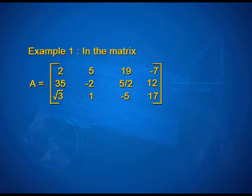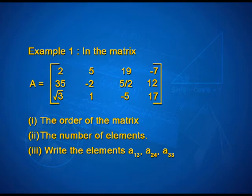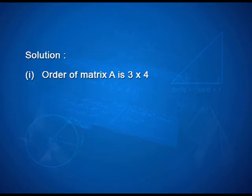Now, look at an example on your screen. In the matrix A = [2, 5, 19, -7; 35, -2, 5/2, 12; √3, 1, -5, 17]. Write the order of the matrix, second the number of the elements and third write the elements A13, A24 and A33. Now look at the solution: order of the matrix A is 3 by 4 as the matrix has 3 rows and 4 columns.